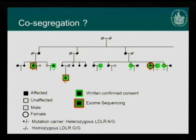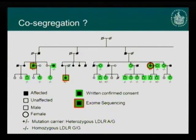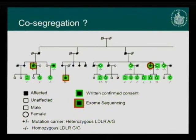Looking at the co-segregation of this variant in the family — showing only members above age 60 since myocardial infarction is a late-onset disease — we see that affected family members carry the variant whereas unaffected members do not. In the younger generation, none have been affected so far, but three family members also carry the variant, so we would expect these three to have a higher risk of myocardial infarction compared to relatives without the mutation.